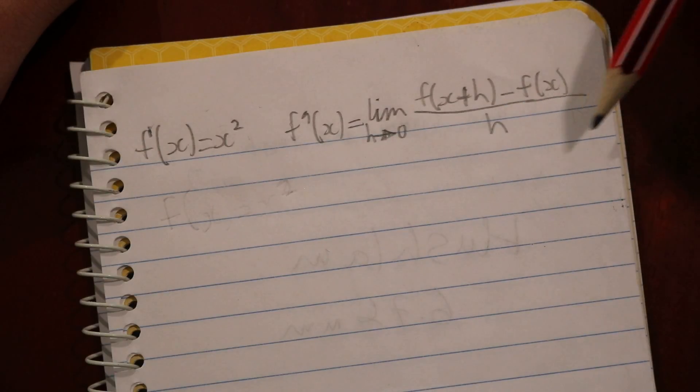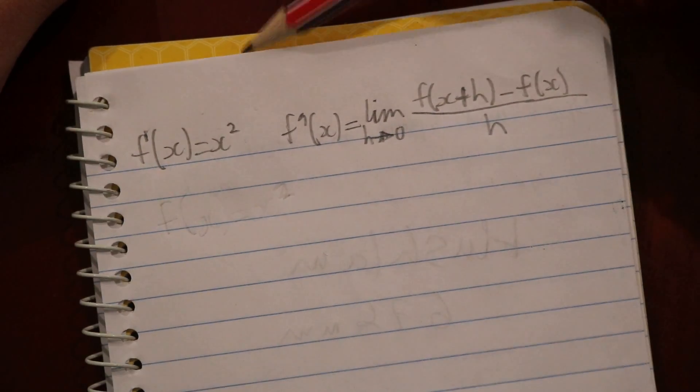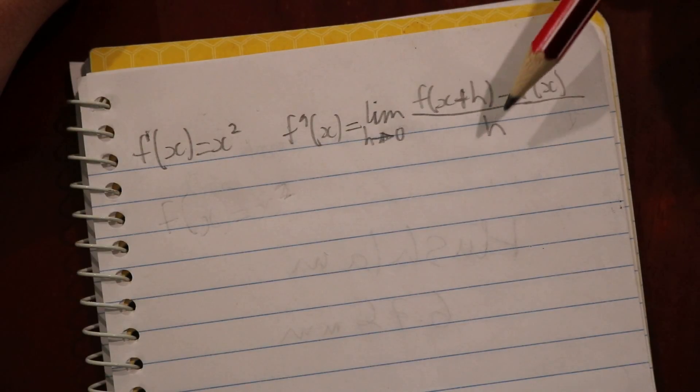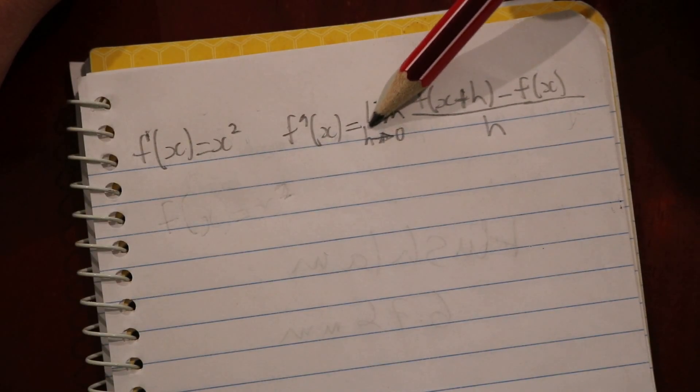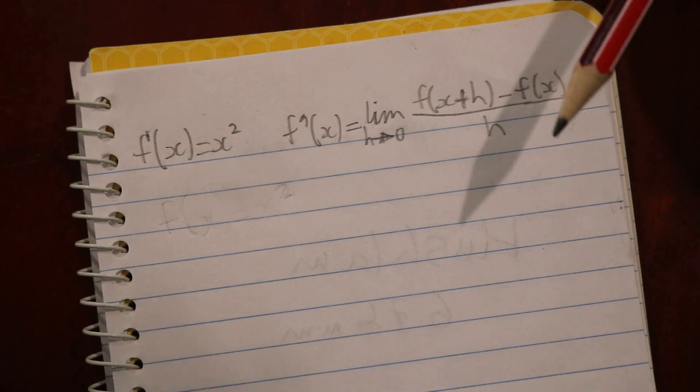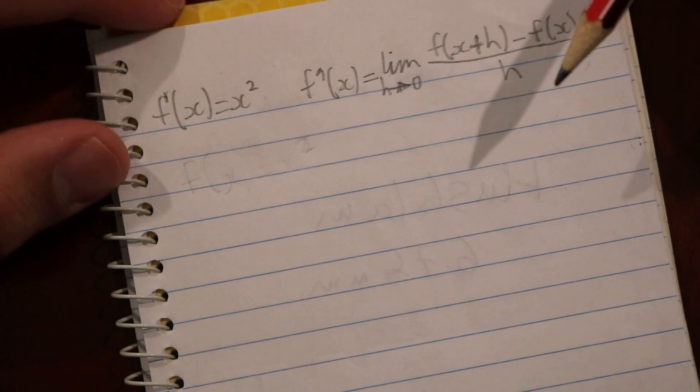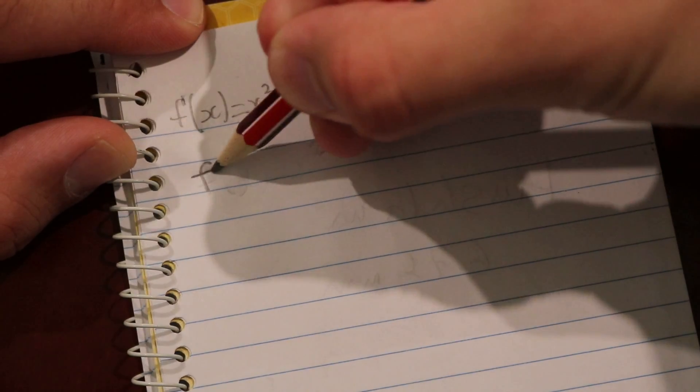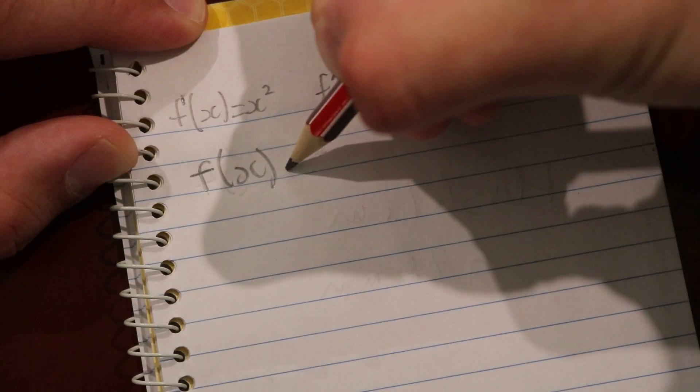First principles is an equation where you substitute values in and work from there as you find the limit of h as it approaches 0. The first step is to write out what the variables are to substitute into the equation.